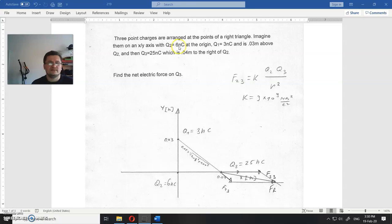Q2 is 6 nC and it's here at the origin. Here you have 0.03 m is Q1, 3 nC, and here is Q3 of 25 nC. Find the net electric force on Q3.